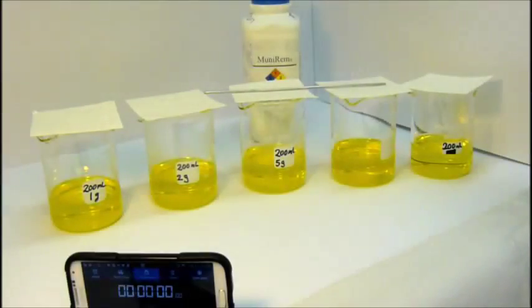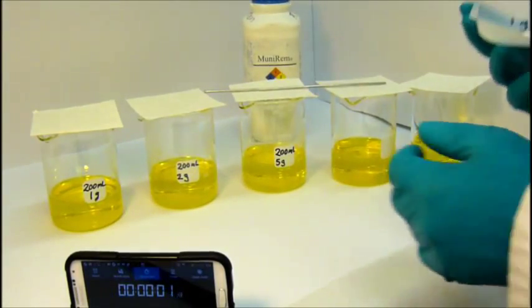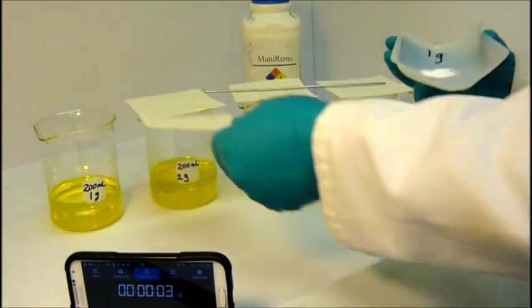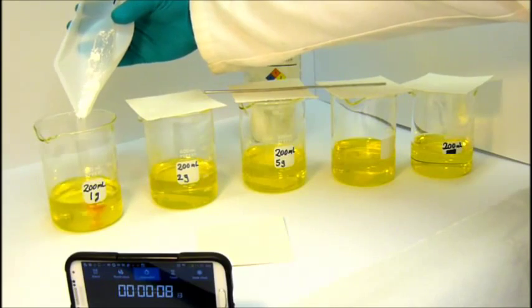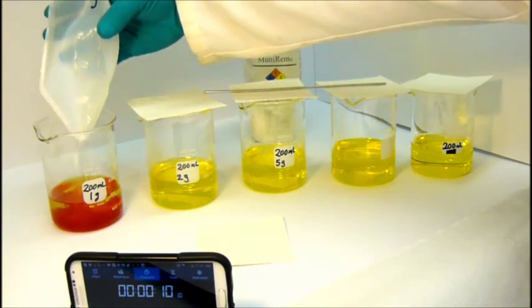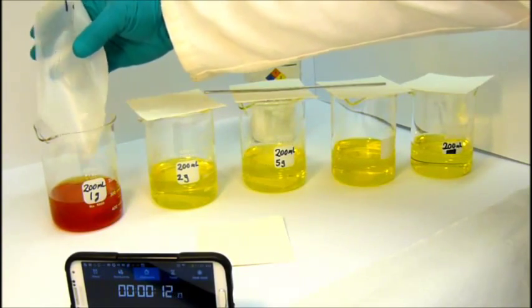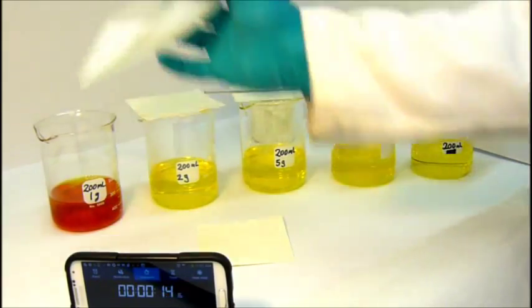To the first three beakers, we add one gram, two grams, and five grams of Munarem powder. The color change to dark red and then dark magenta shows that the picrate has been immediately and completely neutralized.